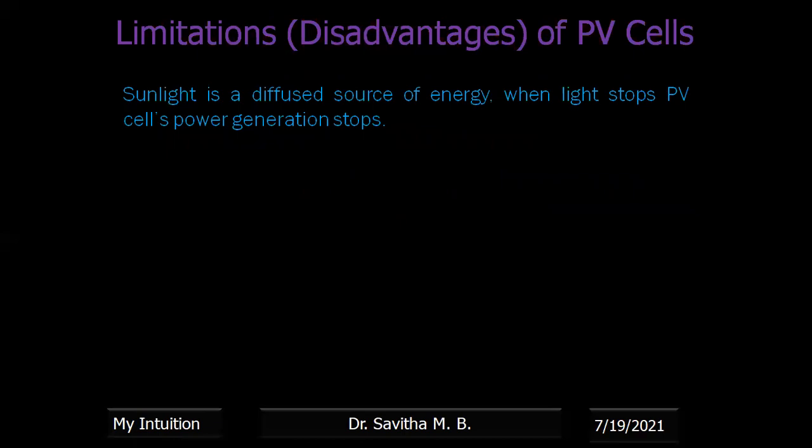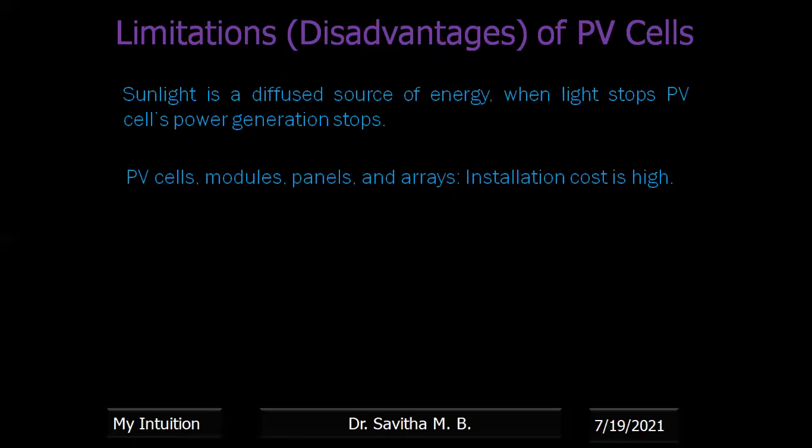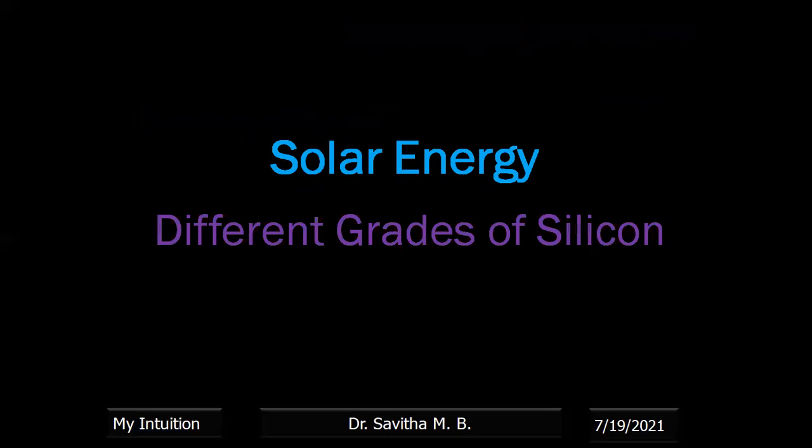What are the limitations? The main limitation is that sunlight is a diffused source, and photovoltaic cells generate electricity only when there is sunlight. PV cell modules, panels, and arrays are easy to install, but the installation cost is high.